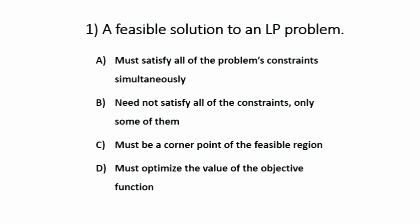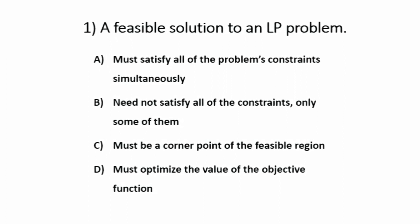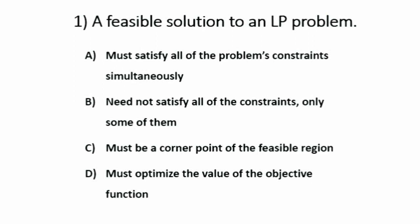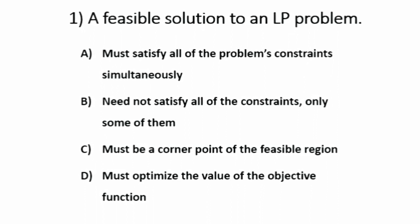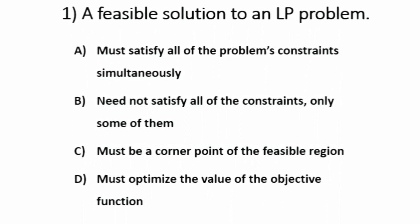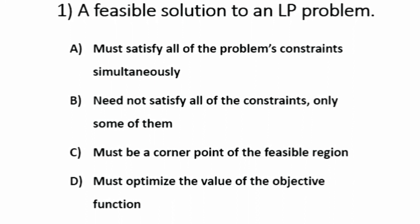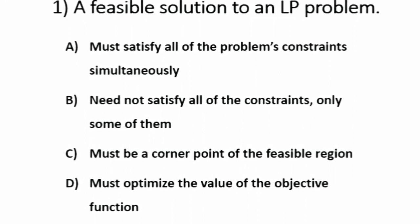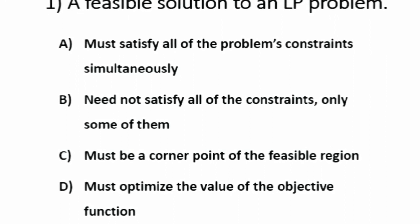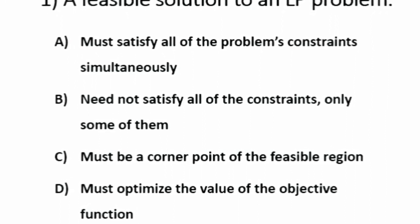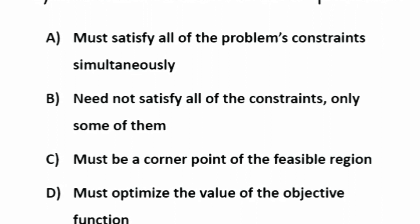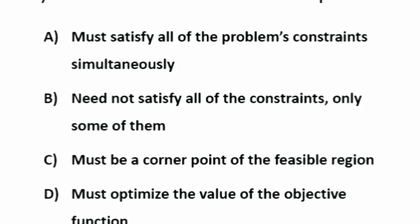Question number 1. A feasible solution to an LP problem — the options are: option A, must satisfy all of the problem's constraints simultaneously; option B, need not satisfy all of the constraints, only some of them; option C, must be a corner point of the feasible region; option D, must optimize the value of the objective function.